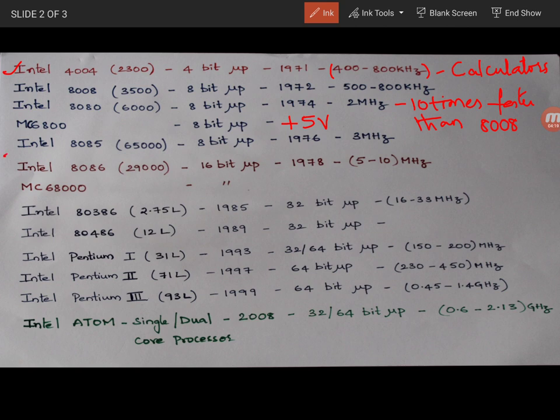And then Intel has released in 1976 one more processor 8085 which is like an upgrade of Intel 8080. And it was requiring plus 5 volts. And it is also an 8 bit microprocessor with 65K transistors on it. And in year 1978, Intel came up with a 16 bit microprocessor.